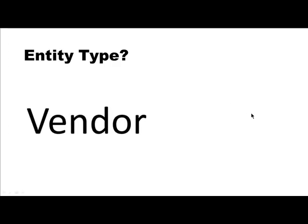'Vendor' — can it be an entity type? Of course. It's just like customer — it satisfies all the properties. It's a category, it can have instances (vendor A, vendor B, vendor C), and it has attributes: vendor ID, vendor name, vendor address, and so on. Therefore it can also be an entity type.